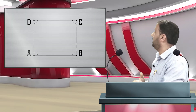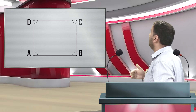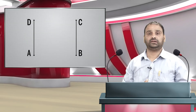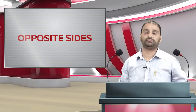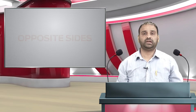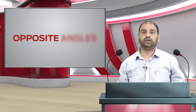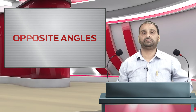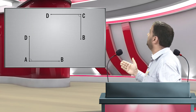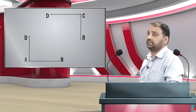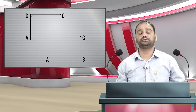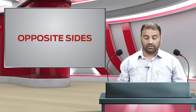Looking at quadrilateral ABCD, sides AB and CD have no common point, so we call them opposite sides. Similarly, AD and BC have no common point, so they are also opposite sides. A quadrilateral has two pairs of opposite sides. For opposite angles: if any two angles have no common arm, they are opposite angles. Angle BAD and angle BCD have no common arm, so they are opposite angles. Similarly, angle ABC and angle ADC are opposite angles. A quadrilateral has two pairs of opposite angles.